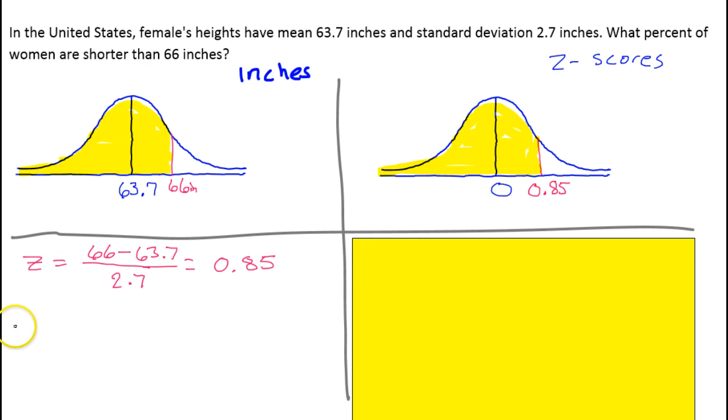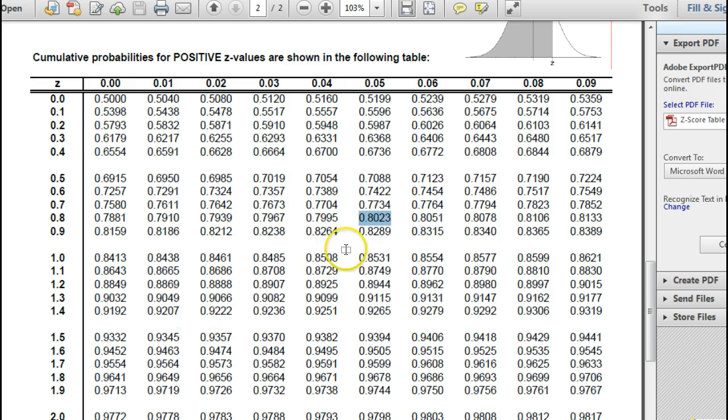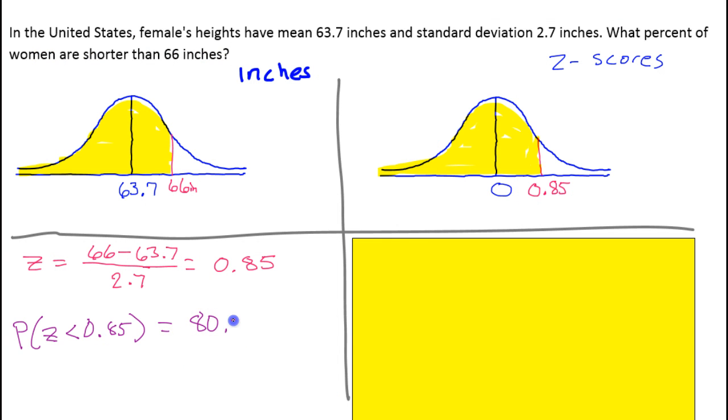The percentage of z-scores to the left of 0.85 is equal to 80.23%. That tells us that this is 80.23%—this yellow area. That should match what's going on over here. This will also be 80.23%.